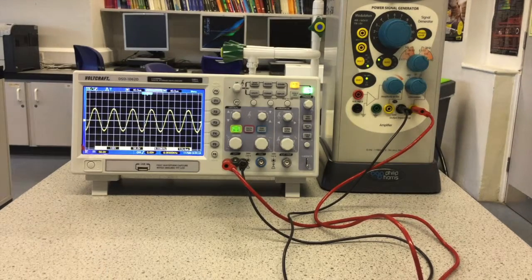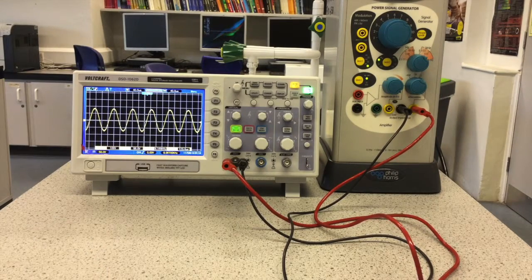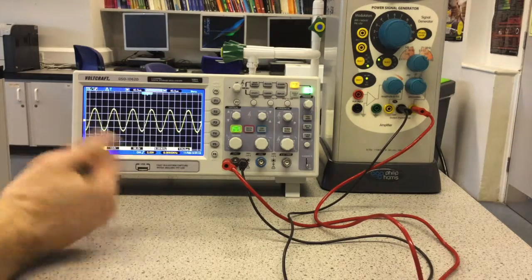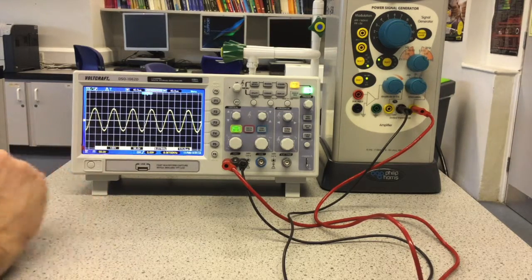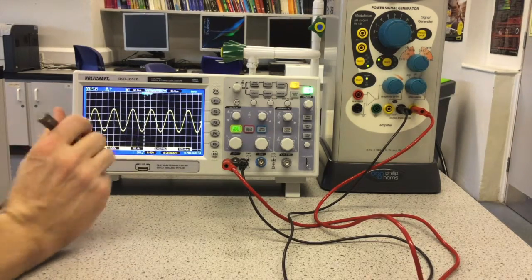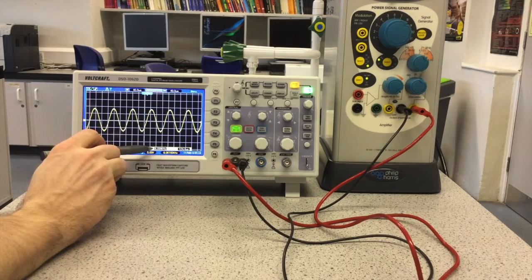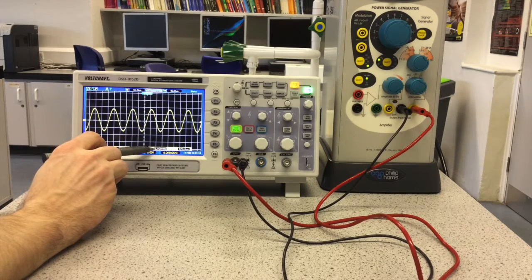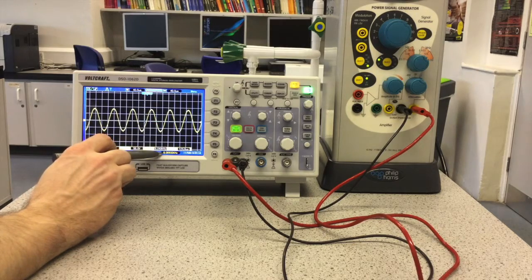So that's how you could manually work out the frequency, but this digital oscilloscope, as I said, has more functionality than an analogue one, and it's showing the frequency of the signal over here and here.